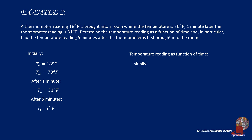From the initial state, with the working formula of T is equal to T sub M plus C times E raised to KT, plug the given values of 18 degrees and 70 degrees with time equal to 0. Since E raised to 0 will be 1, C is simplified as negative 52 degrees. So the partially modified equation is T is equal to 70 degrees less 52 degrees times E raised to KT.